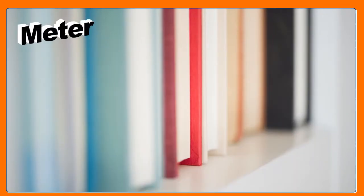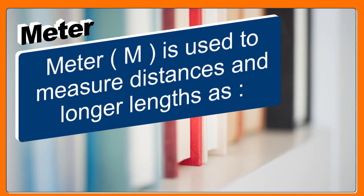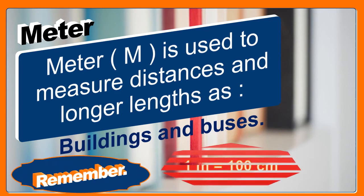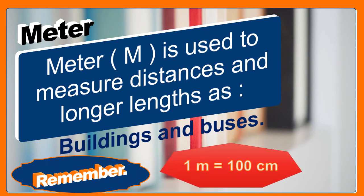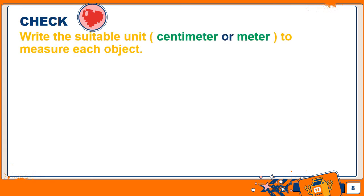We also use meter to measure larger lengths. The abbreviation of meter is m. It is used to measure distances and larger lengths, such as buildings and buses. Remember: 1 meter equals 100 cm. We usually use a measuring tape for meters.